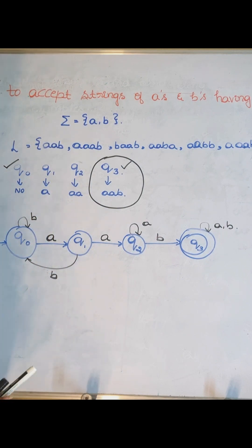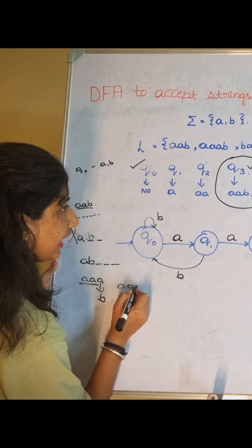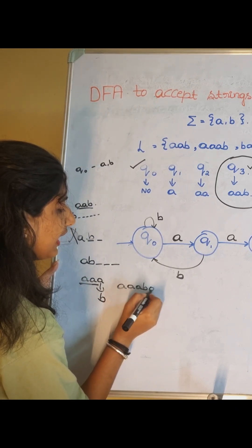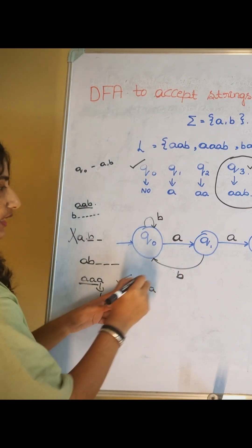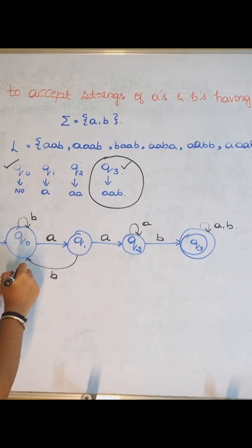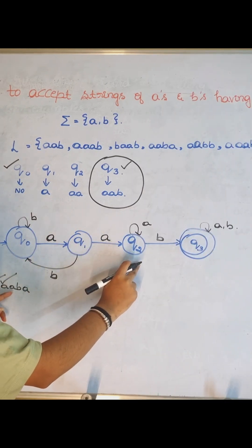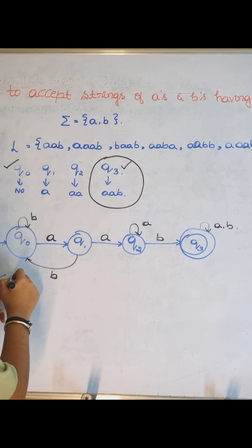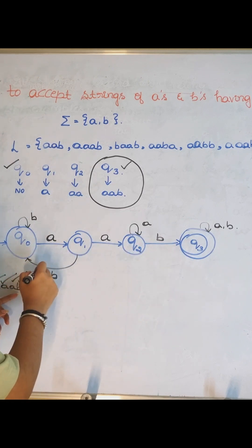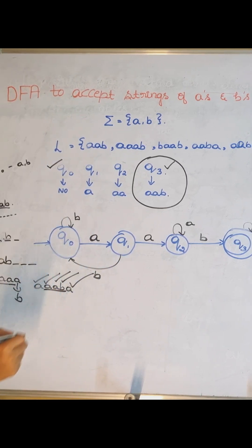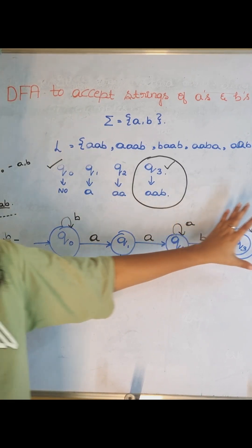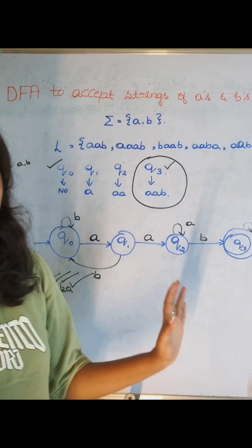Let's take these three examples and check. The first one is A, A, A, B, A. Q0 on A moves to Q1. Q1 on A moves to Q2. Q2 on A stays in Q2, waiting for B. Q2 on B moves to Q3. Now it got A again. So here we have the substring A, A, B and this is in the final state — this is the accepting state.